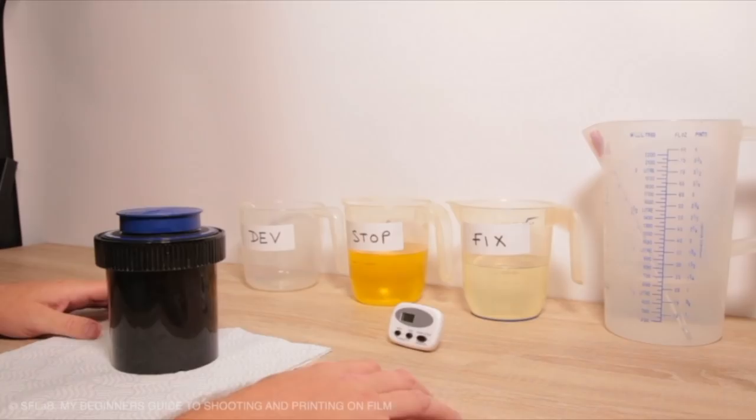So you've taken your first photograph, developed your film, now you want to make some prints. If you've got a bathroom at home it's relatively easy. All you need to do is black out the windows and then you've got your darkroom. All the water's there for washing, you just need the chemicals and a few other bits.